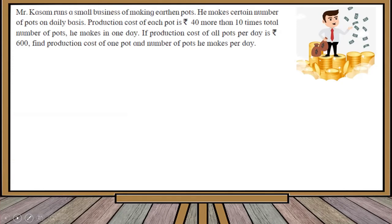Production cost of each pot, that means one pot will cost him ₹40 more than 10 times the total number of pots made. One thing we can understand is that we don't know the total number of pots right now in one day. If the production cost of all the pots per day is ₹600, find the production cost of one pot and the number of pots he makes per day.